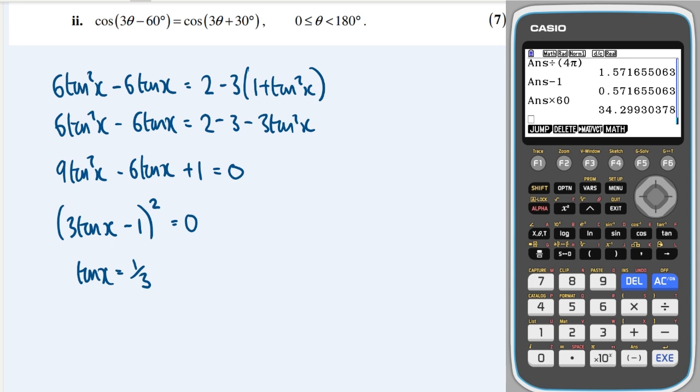And that equals 0, which means that tanx is equal to 1/3. And that means that x is equal to tan⁻¹ of 1/3 is 0.322, and then the second solution for tan is plus π, which is 3.463.